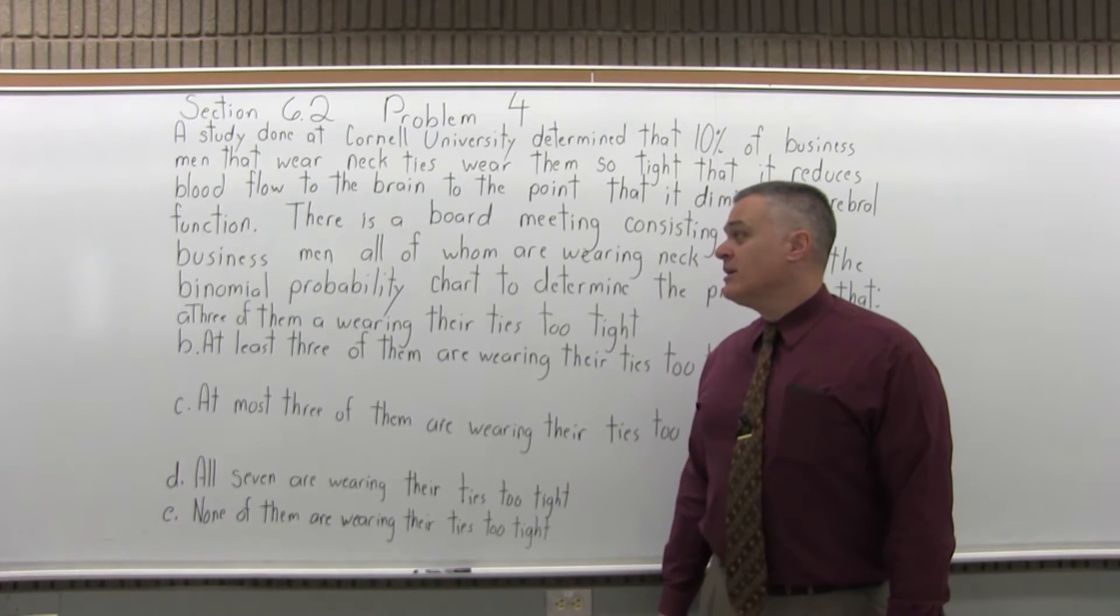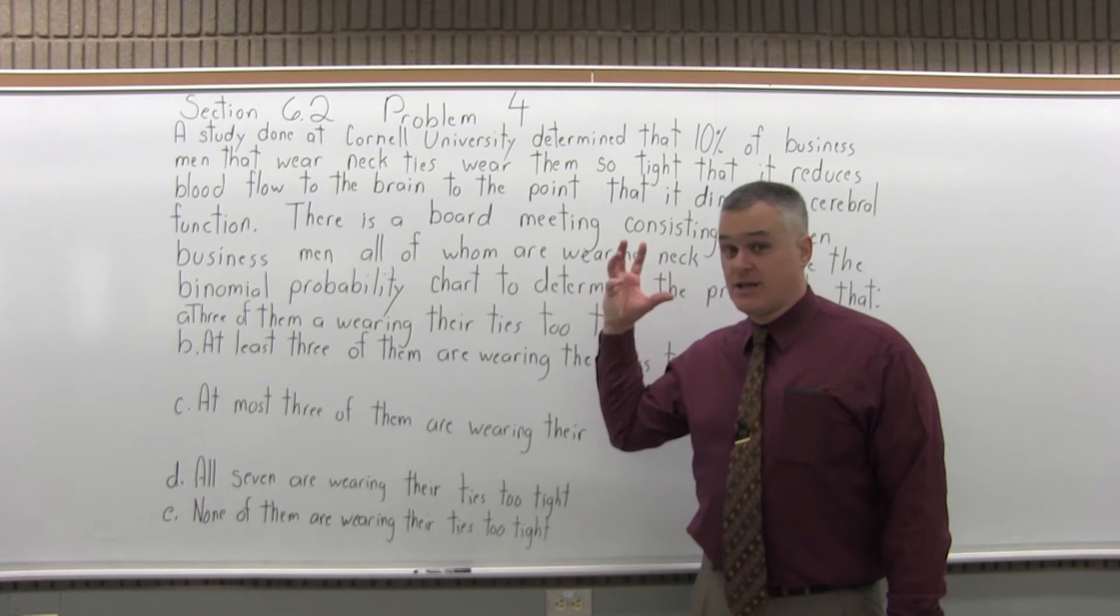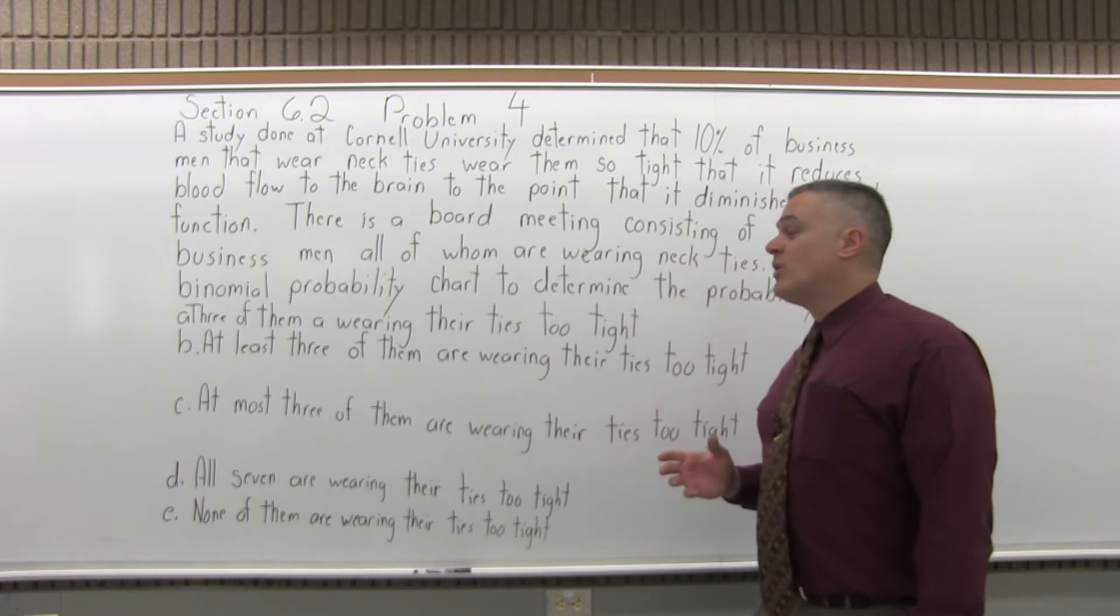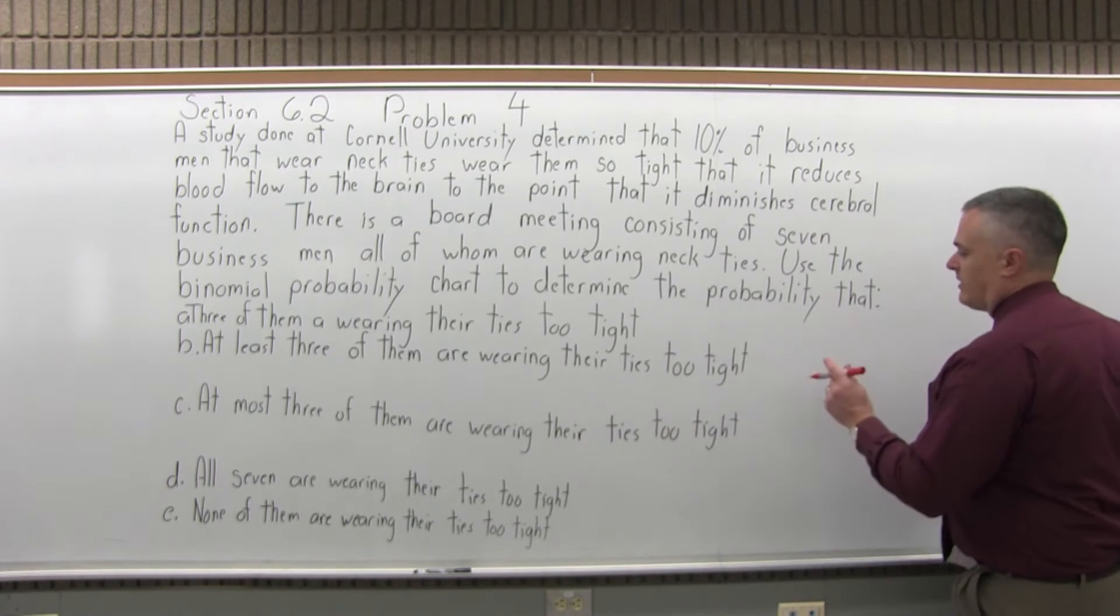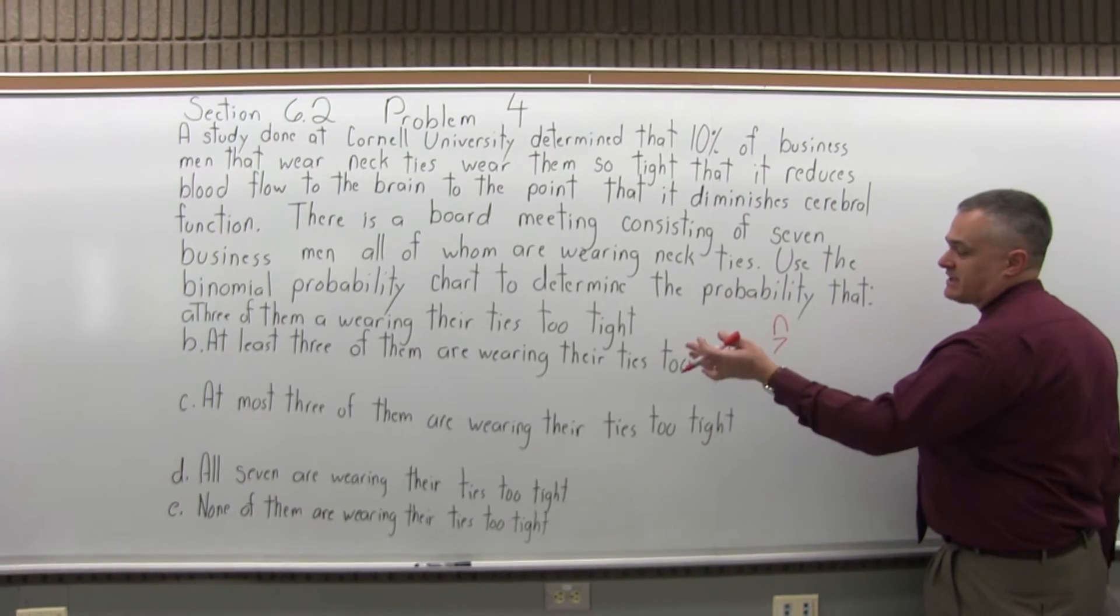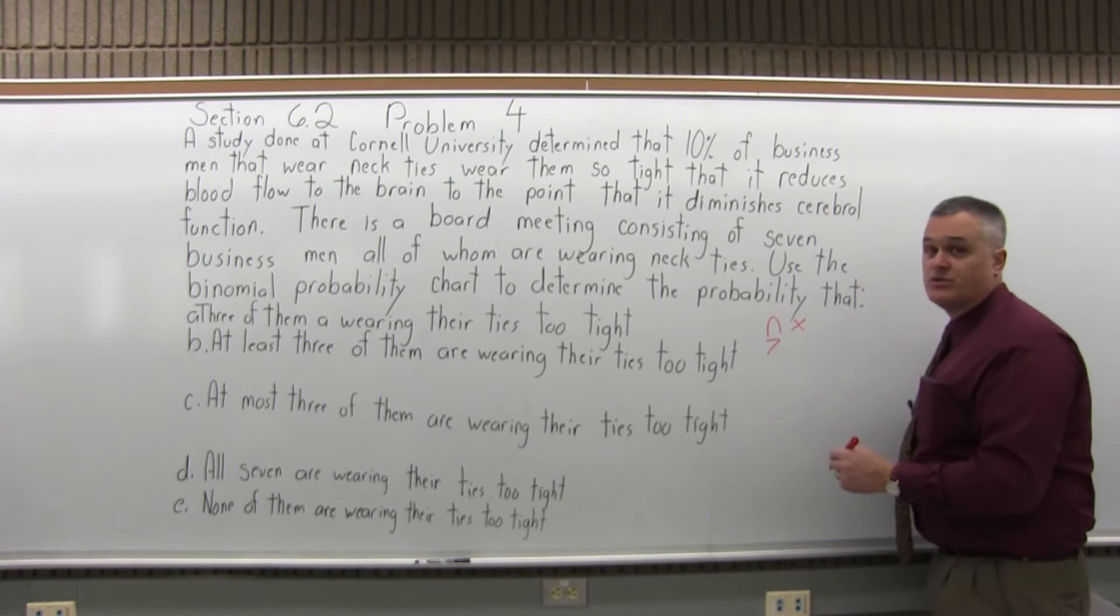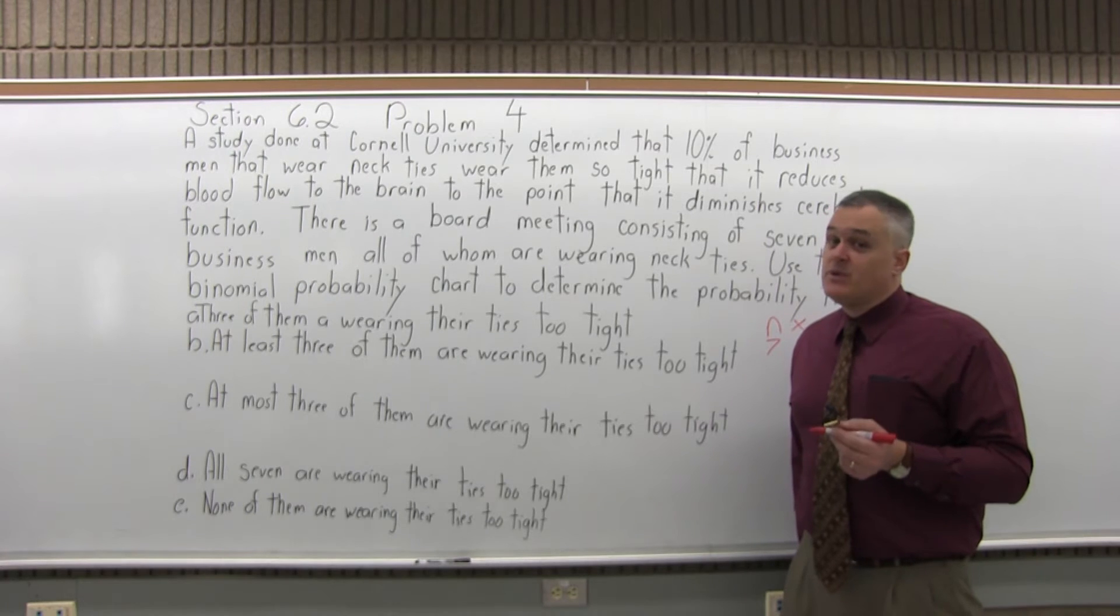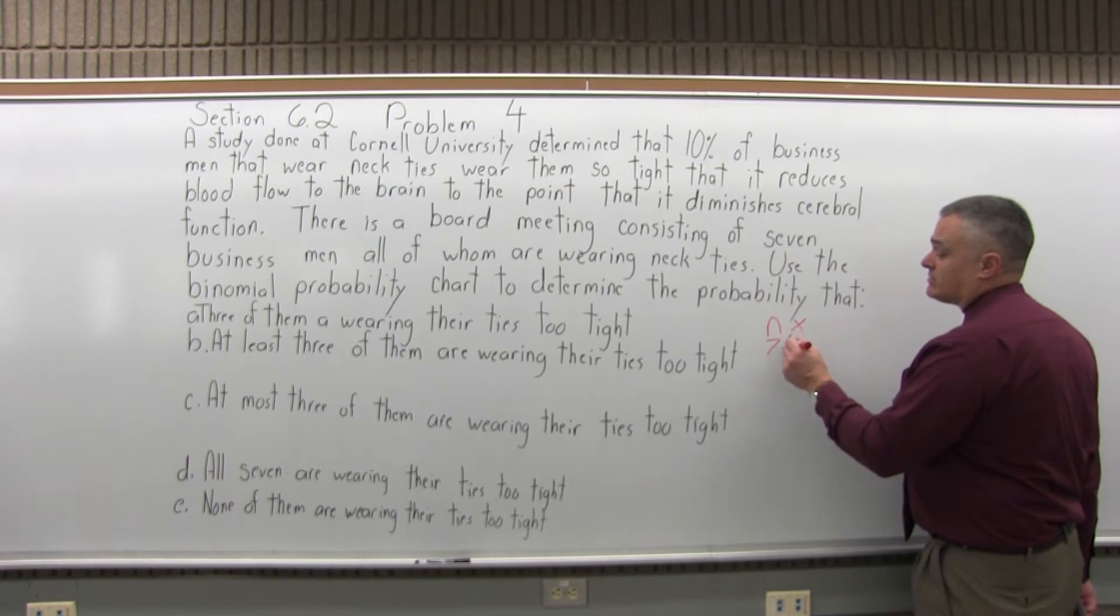Part A: find the probability that three of the businessmen at the meeting are wearing their ties too tight, so tight that they can't think properly. What we have to do is find the part of the binomial chart where N is 7, because we have seven businessmen. The values of X are going to go 0 through 7, because don't forget, maybe none of them have their ties on too tight. It's not 1 through 7, it's 0 through 7.